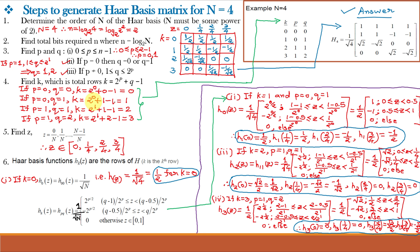For k equal to 2, p equals 1 and q equals 1. The limits give root 2 by 2 for z in [0, 0.25) and minus root 2 by 2 for z in [0.25, 0.5), and 0 otherwise. H2(0) equals root 2 by 2, which is 1 upon root 2. H2(1/4) equals minus 1 upon root 2, since 0.25 starts that interval. H2(2/4) equals 0, and H2(3/4) equals 0, since neither falls within the active limits.